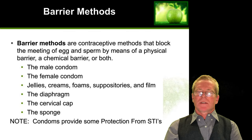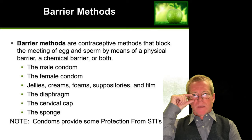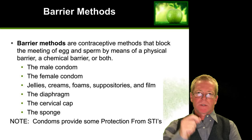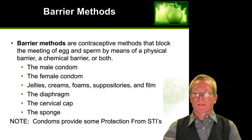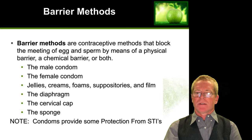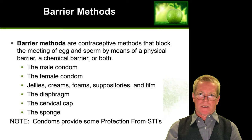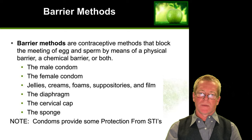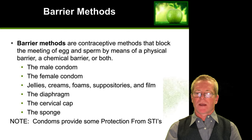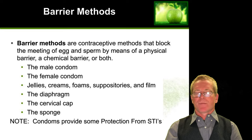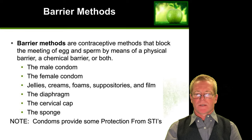Let's break these contraceptive methods into two categories. The first are barrier methods — methods that physically block sperm from meeting the egg. Barrier methods include the male condom, the female condom, jellies and creams and foams, the diaphragm, the cervical cap, and the sponge. Condoms in particular do provide some protection from sexually transmitted infections.